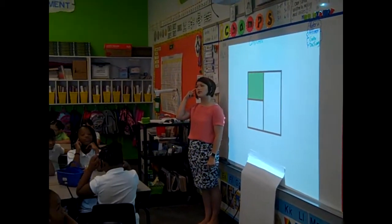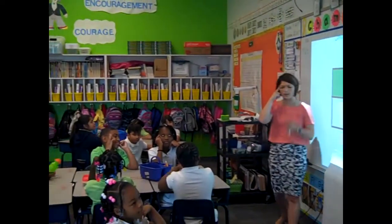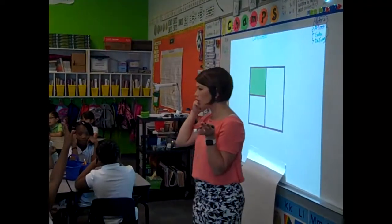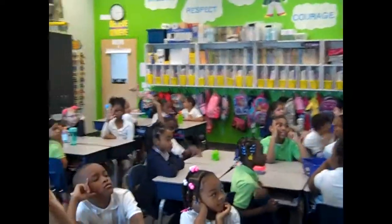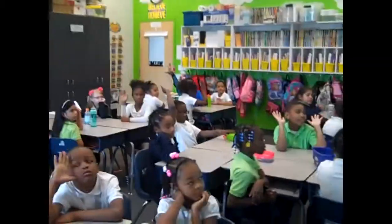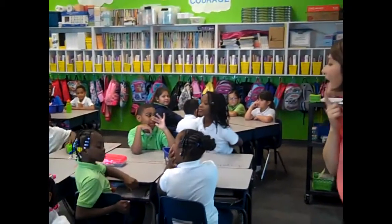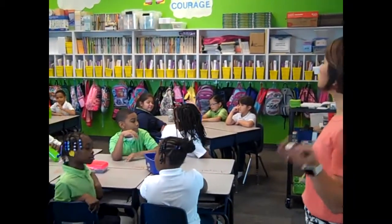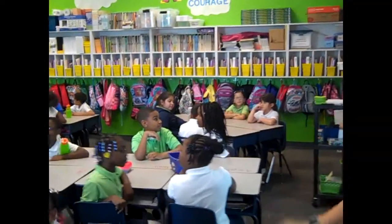Let's think silent and solo to ourselves first. Put your thinking finger up. Partner A's, raise your hand. Partner A, I want you to turn to partner B and tell them what fraction do you think is shaded. Ready? Go.